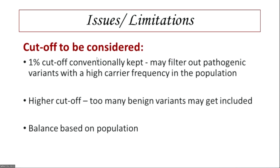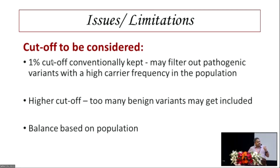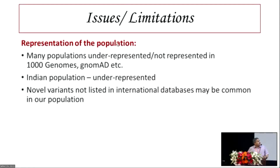There are certain limitations with these databases. We usually apply a cutoff of 1% because we consider that the polymorphism frequency, but that filter may remove some pathogenic variants. For example, thalassemia is very common in our population, with a carrier frequency of 3%, so those variants would be removed by a 1% filter. A balance has to be struck based on the population you are studying, and cutoffs must be adjusted for diseases common in that particular population. Additionally, many of these databases — gnomAD, ExAC, 1000 Genomes — really do not have the Indian population represented.